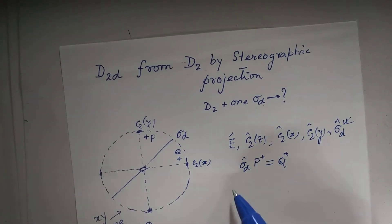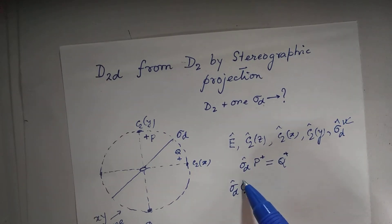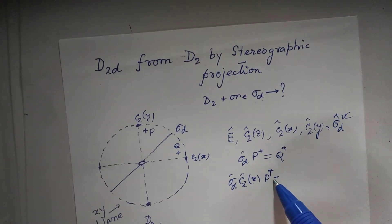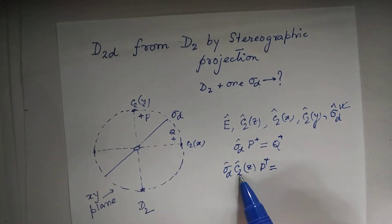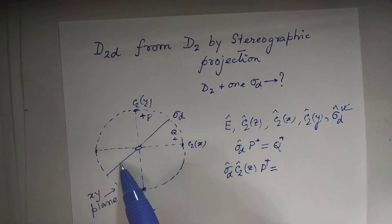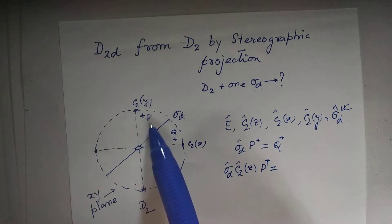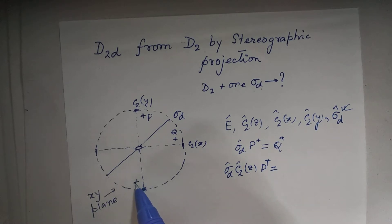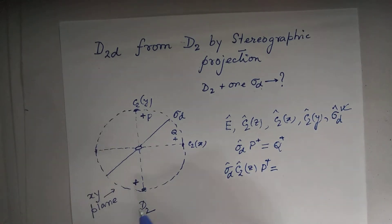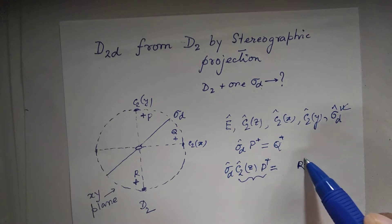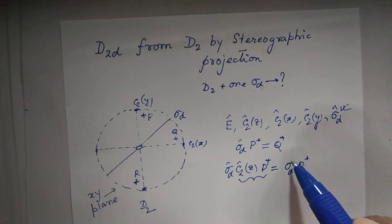Then sigma_d multiplied by C2z — what happens if this is applied to p+? P+ subjected to C2z: the C2z axis is perpendicular to the plane of the paper, so by turning through an angle of 180° it will arrive somewhere here. Since it is rotating above the z-axis it will remain above the plane of the paper, so it is plus. Let us call it r+.